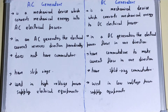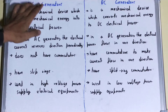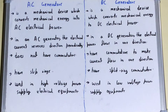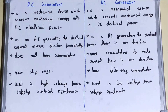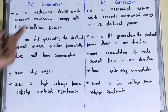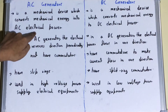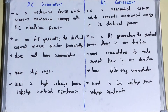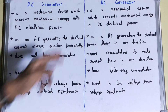Hello friends, in this video I'll be helping with the difference between AC generators and DC generators. So let's start. An AC generator is a mechanical device which converts mechanical energy into AC electrical power, producing AC current or alternating current.